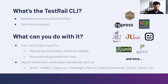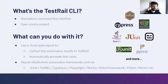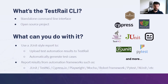What can you do with the CLI? You can use a JUnit style report to upload test automation results to TestRail and optionally automatically generate the test cases as well. These results can be generated from automation frameworks such as JUnit, TestNG, Cypress, Playwright, Mocha, Robot Framework, PyTest, and NUnit. It's a very common format, so usually all the latest frameworks support this in some way, or there are workarounds you can use. We also have a bunch of articles on how to integrate all of these frameworks with TestRail through the CLI.